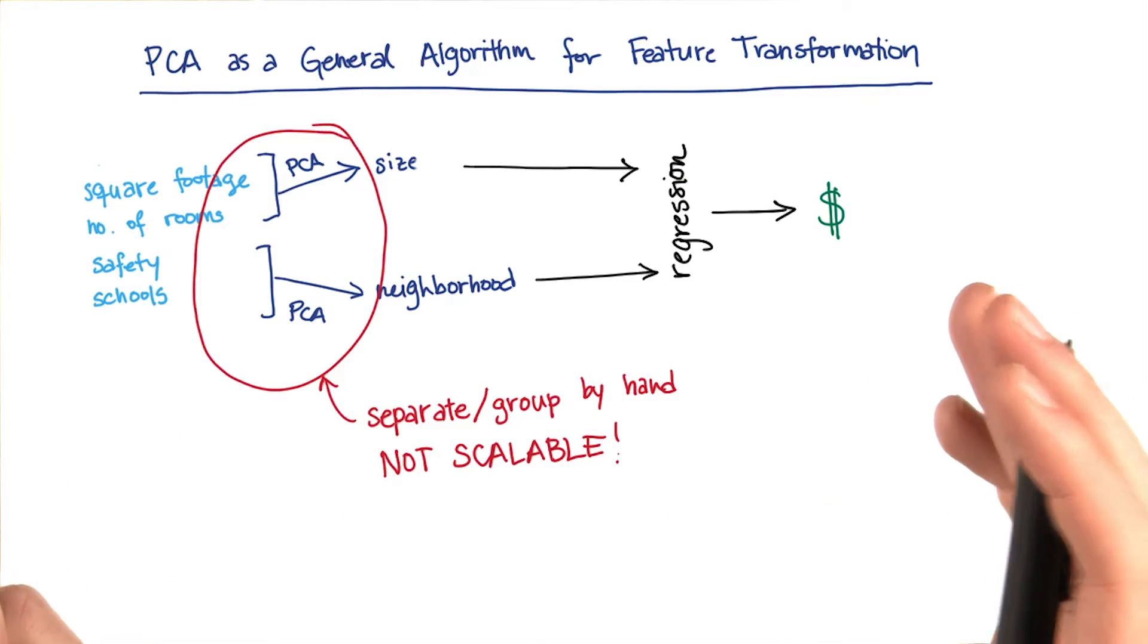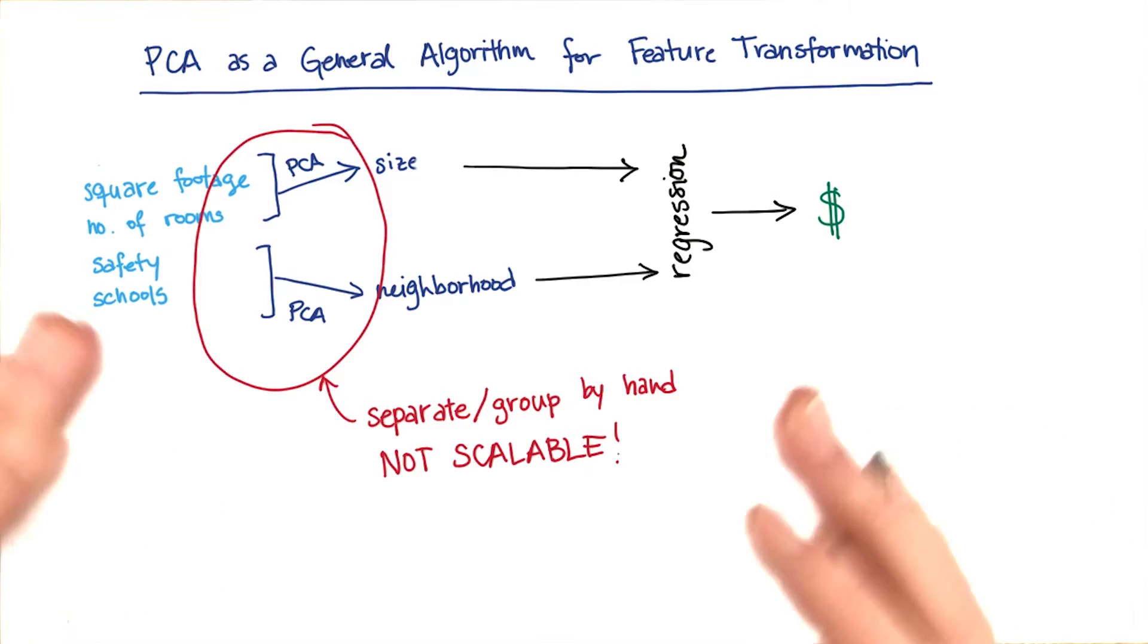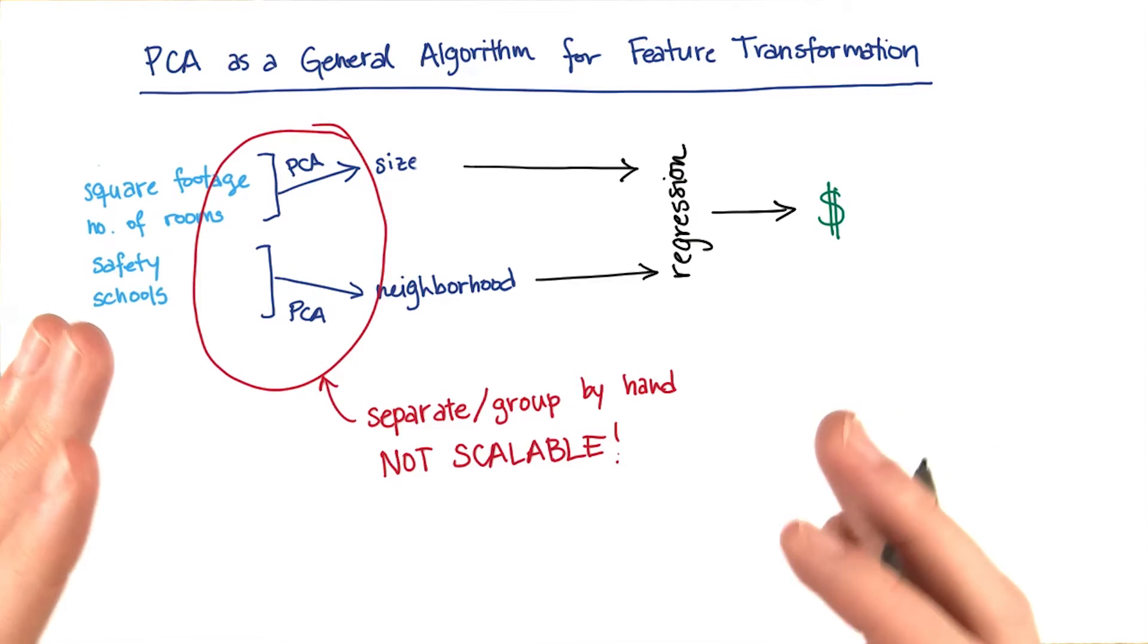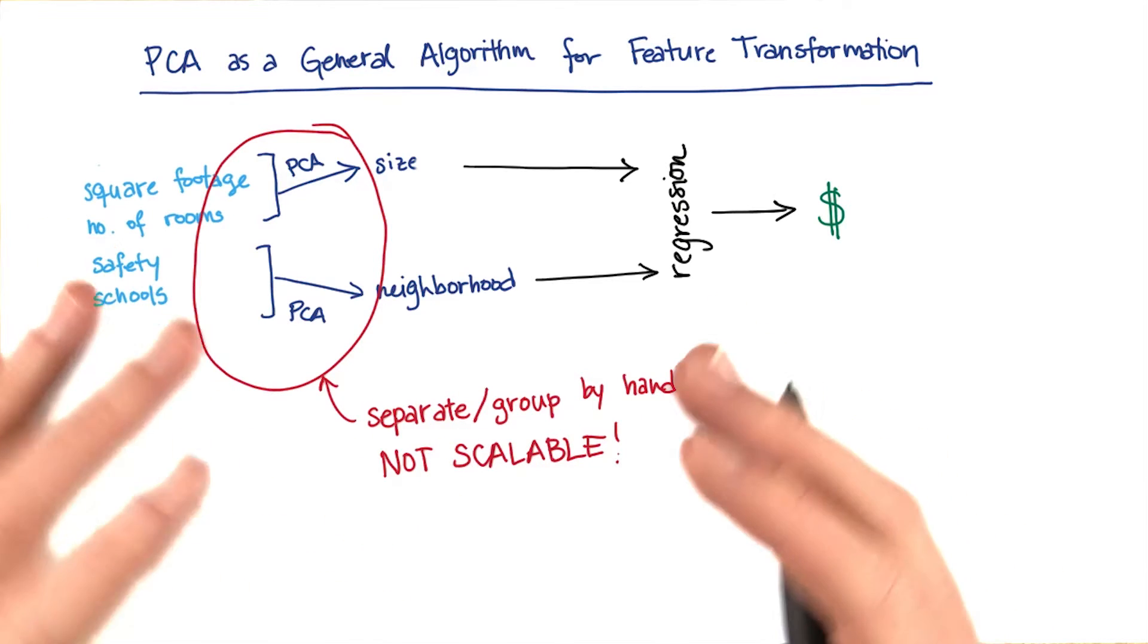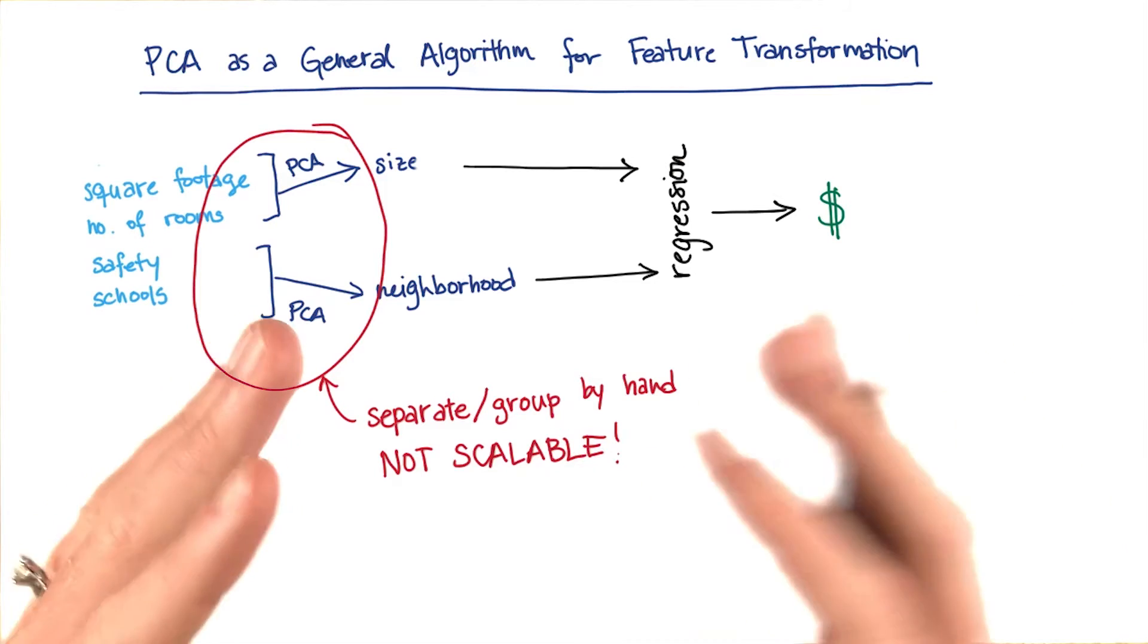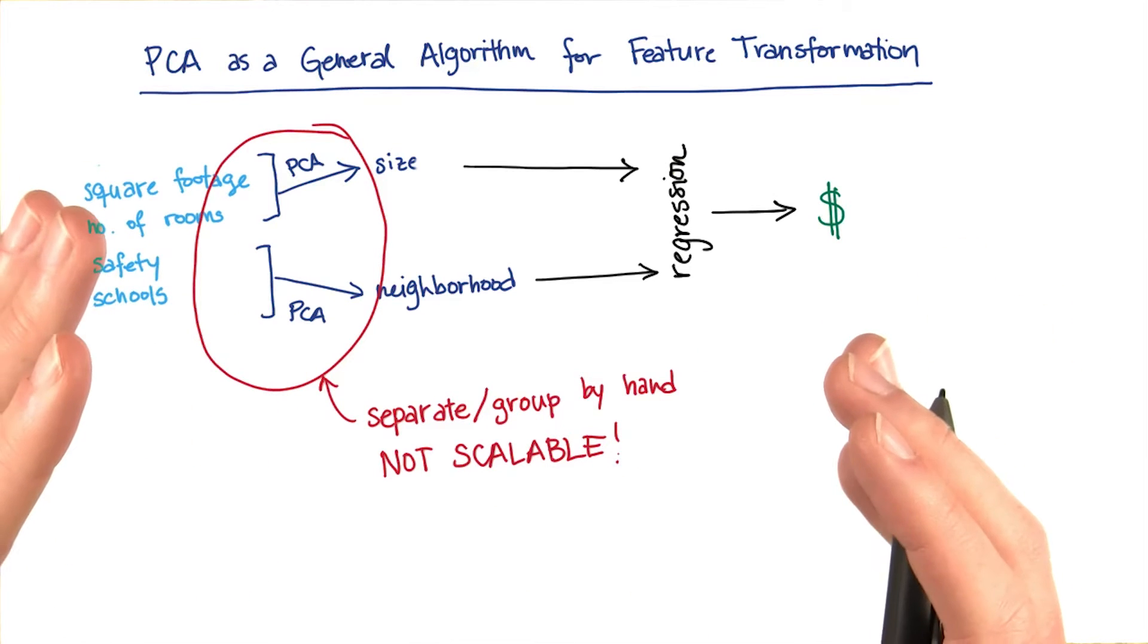Let's suppose we're trying to use PCA for something like facial recognition, where the inputs might be thousands or tens of thousands or even millions of pixels in a picture. There's no way that we could inspect all of those pixels by hand and try to split them up according to what we think might be the combinations that make the most sense and then apply PCA to each of those individually.